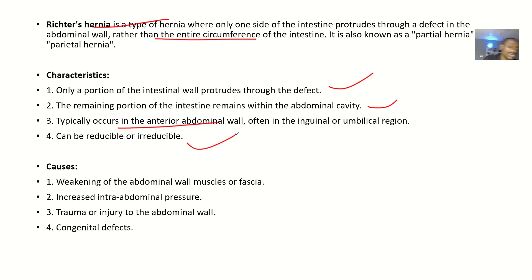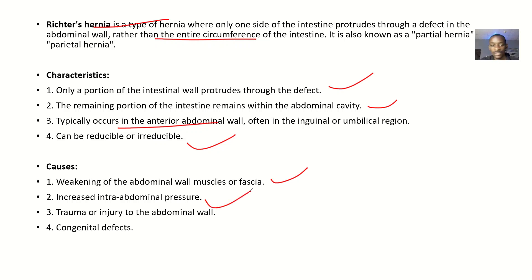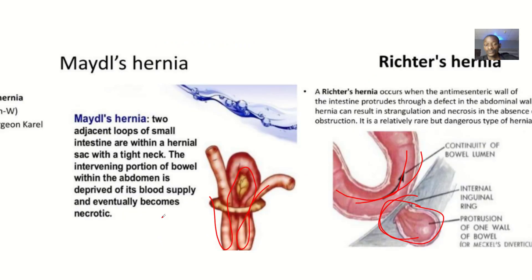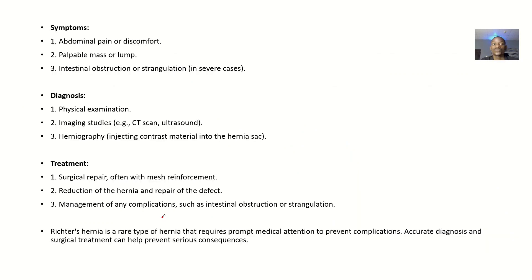Talking about the possible causes: it could be due to weakened abdominal wall muscles or fascia, increased intra-abdominal pressure, trauma or injury to the abdominal wall, or some congenital defect. These are the possible causes of Richter's hernia.